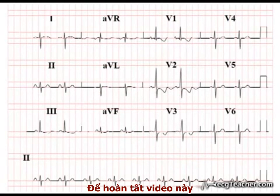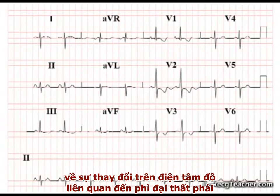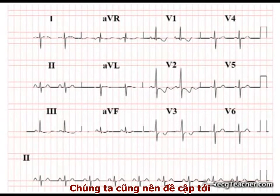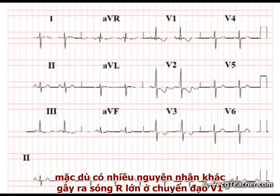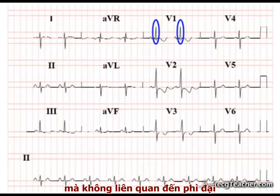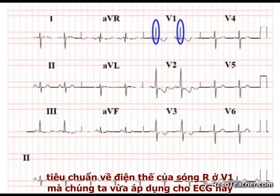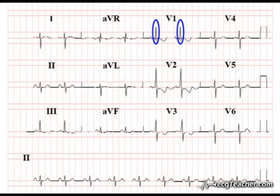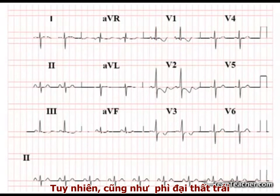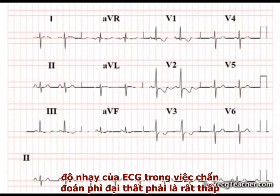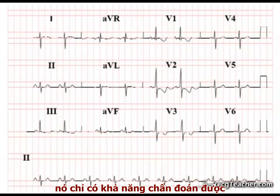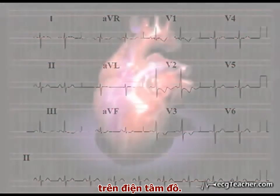To complete our brief discussion of the ECG changes associated with RVH, it is worth mentioning that although there are other causes of a dominant R wave in lead V1 unrelated to hypertrophy, the V1 R wave voltage criteria we've just applied to this ECG have reasonable specificity. However, as for LVH, the sensitivity of the ECG in the diagnosis of RVH is poor. In fact, it is only possible to diagnose about one-fifth of RVH cases from ECG changes alone.